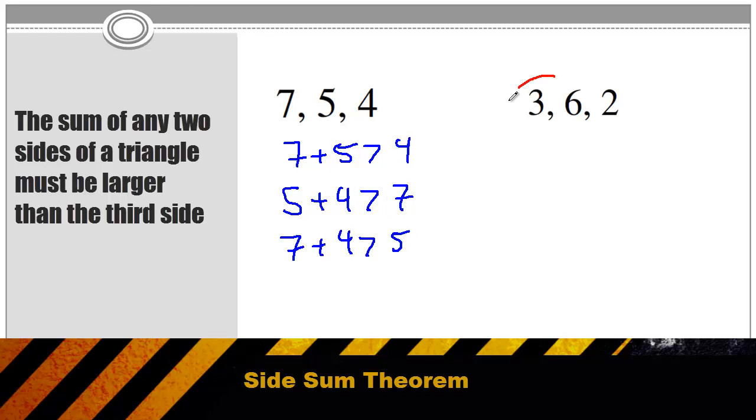When we test the numbers on the right, however, we see a problem. If we add 3 plus 6, yes, that's bigger than 2. But if I add 3 plus 2, that is not bigger than 6. So 3, 6, and 2 could not be the sides of a triangle.